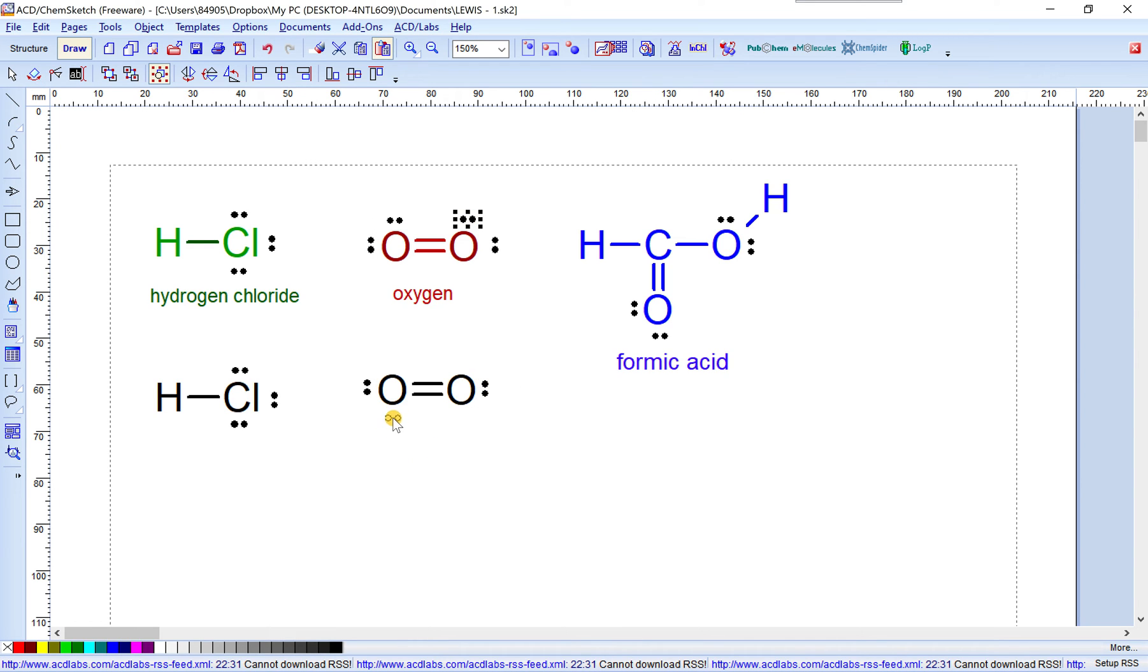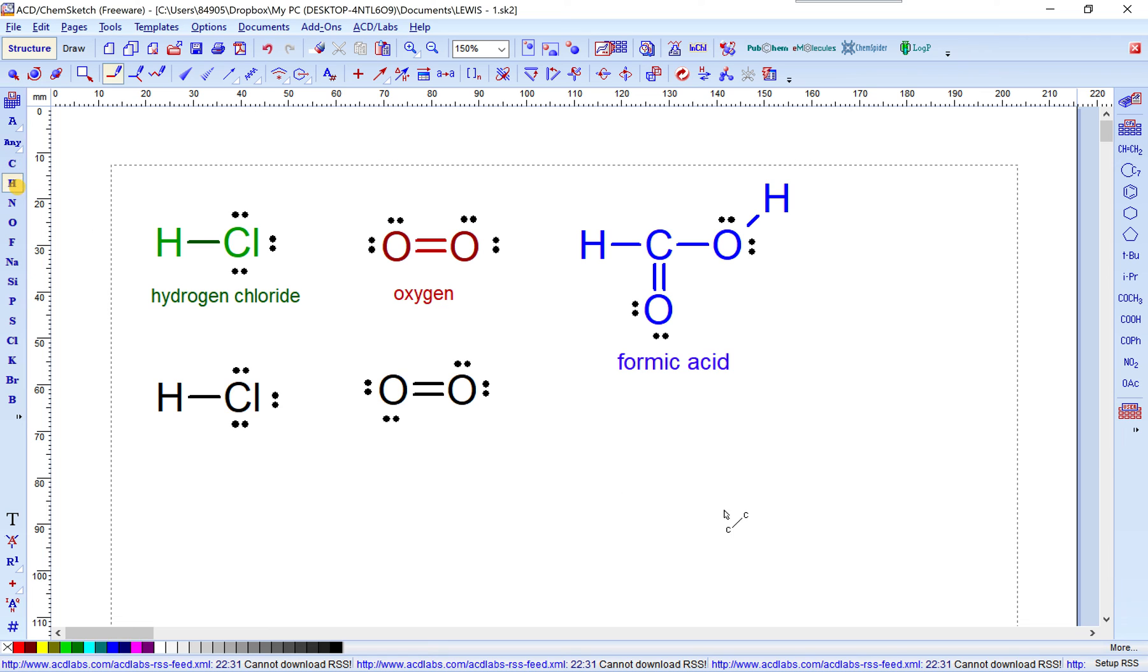And formic acid, draw the structure formula first. Hydrogen, carbon - carbon drop out, hold down the left mouse and drop out carbon oxygen, and this is single bond, double bond. Okay, oxygen again, oxygen and hydrogen here. Click on the edit atom label.